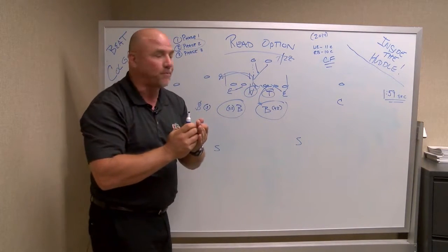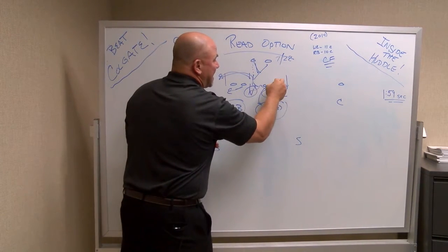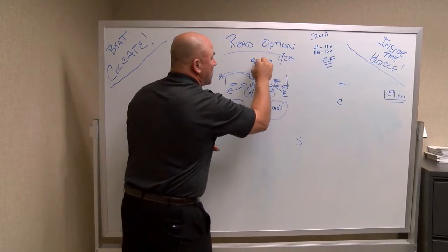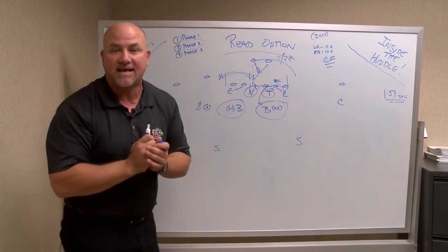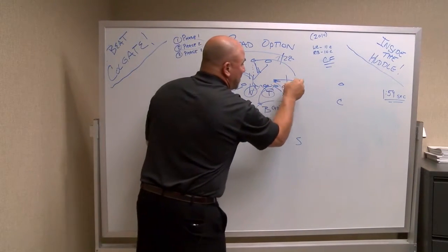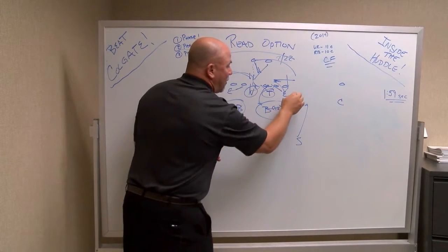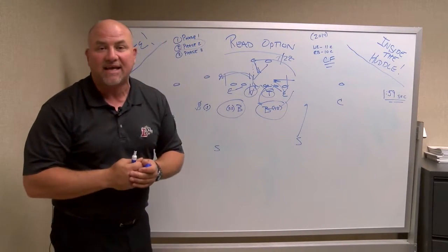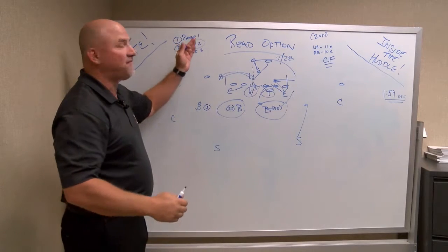Phase two, the most difficult part. As he comes off, this end crashes down. Got to keep his shoulders square in case Melville pulls it and gets to the outside. Have the ability to slow it down and get some help over the top and from your secondary against the quarterback in the phase two.